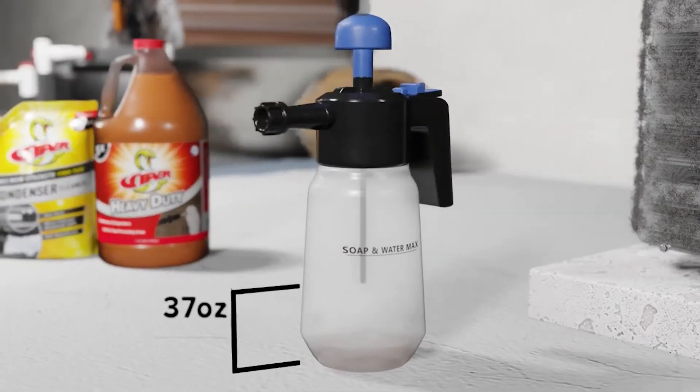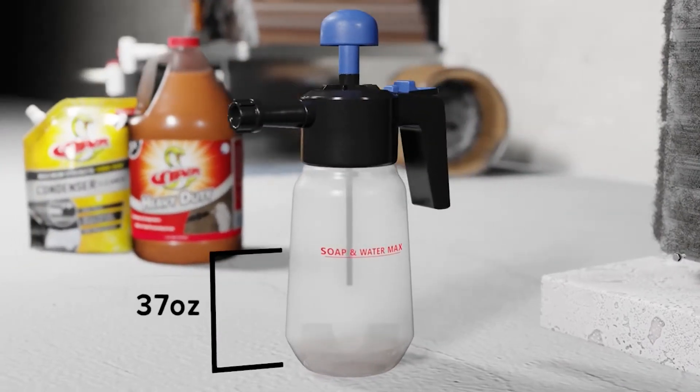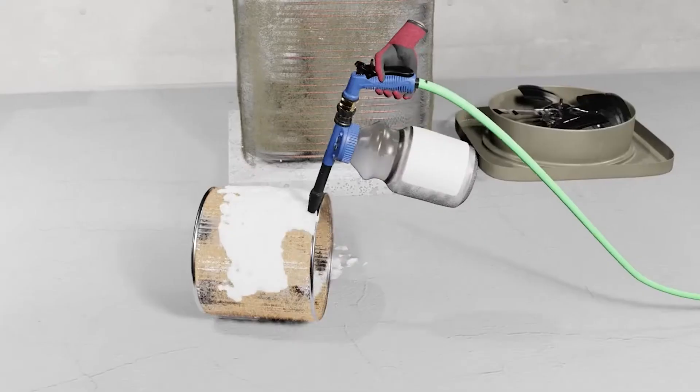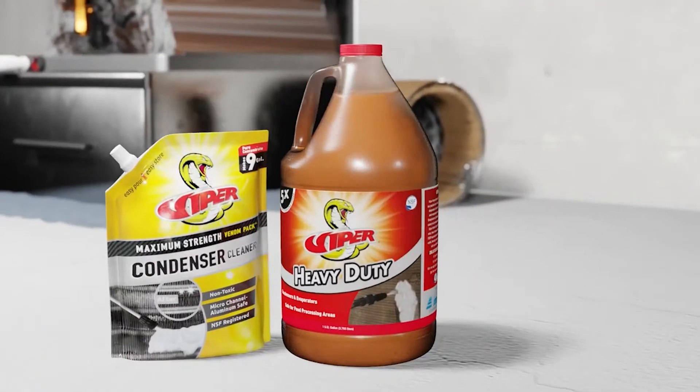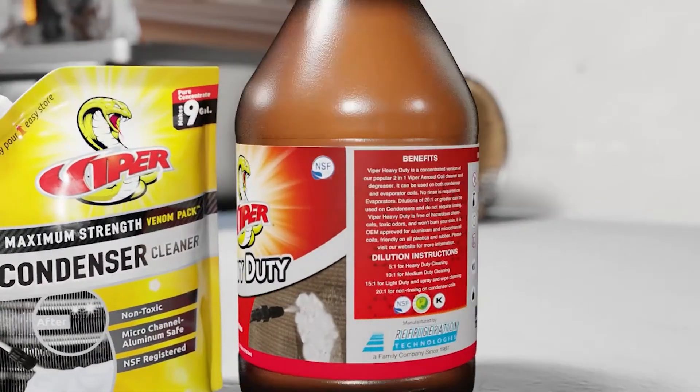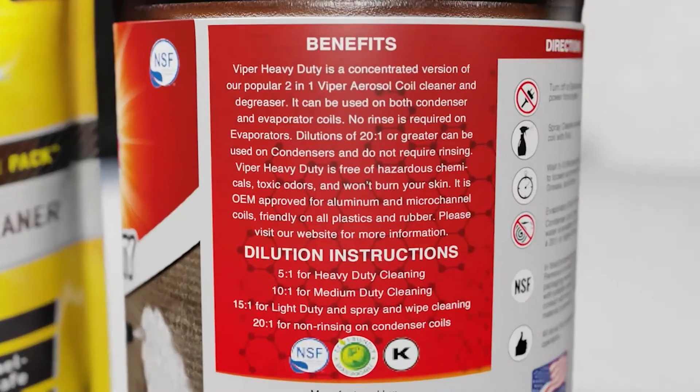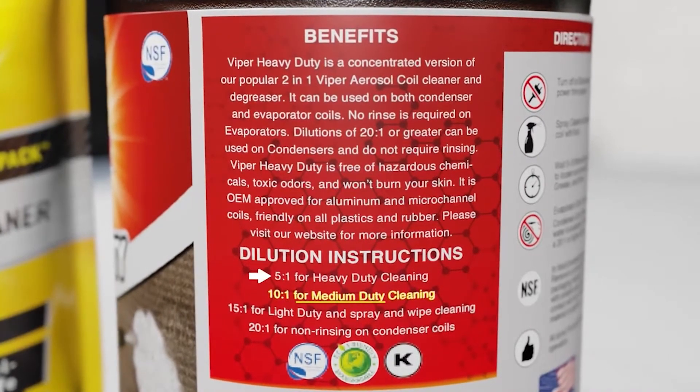Refrigeration Technologies Viper products have two primary delivery methods: a pump sprayer or a foam gun connected to a hose. Check carefully for dilution instructions. You'll notice that the Viper HD gallon jug gives separate dilution instructions for heavy duty, medium duty, light duty, and non-rinsing.